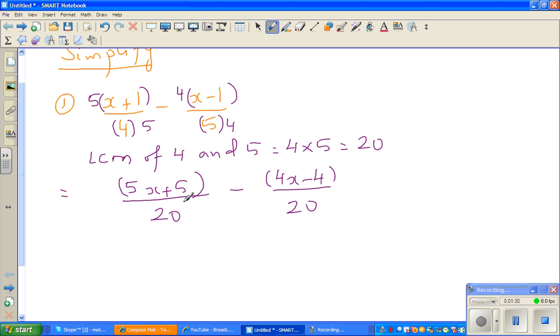Okay, now the denominators are equal, so you can take away the numerators. So this is 5x plus 5. I will do more steps so that you understand. Minus 4x minus 4 over 20.